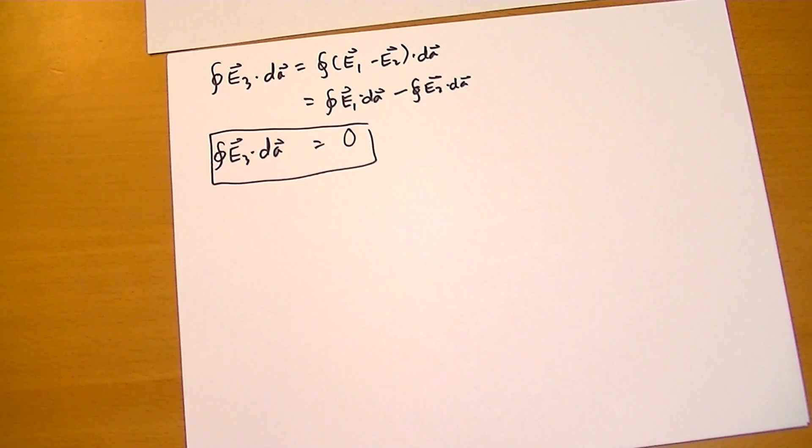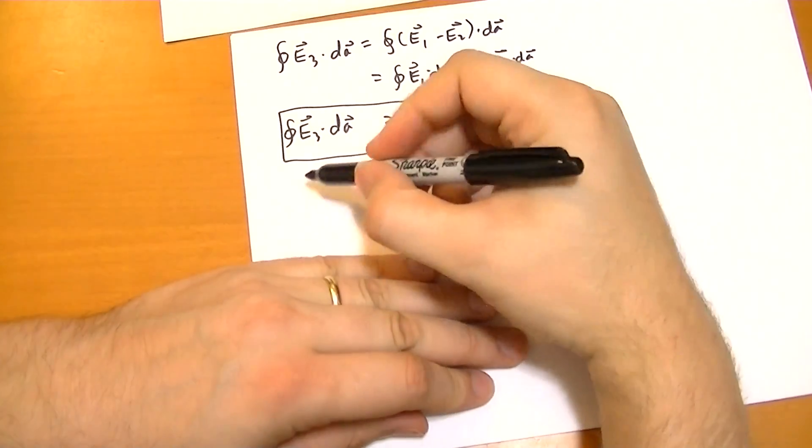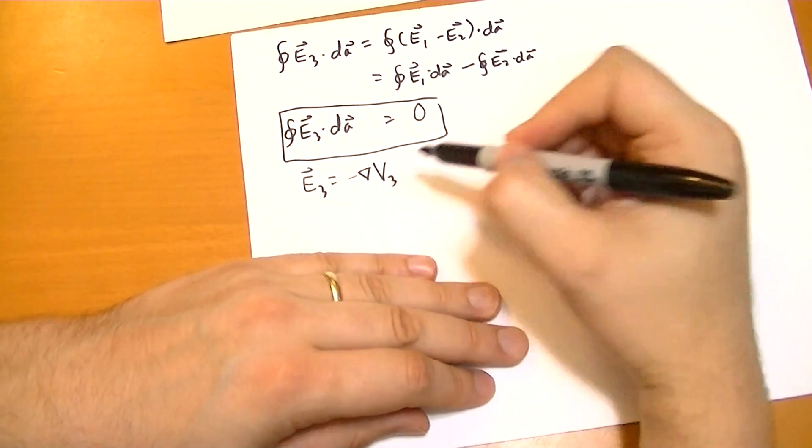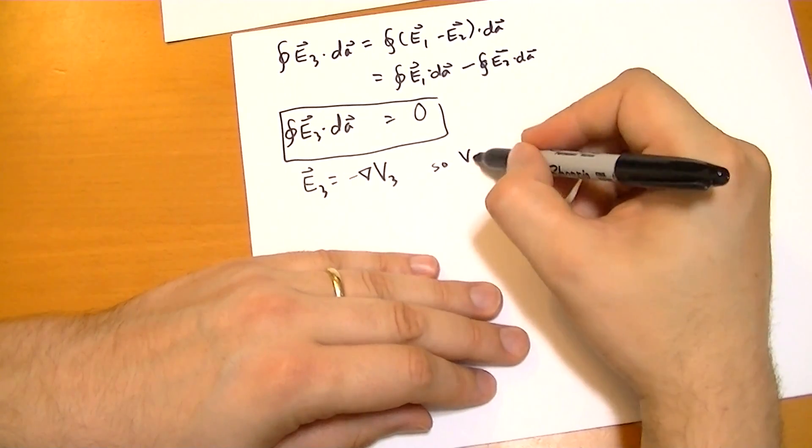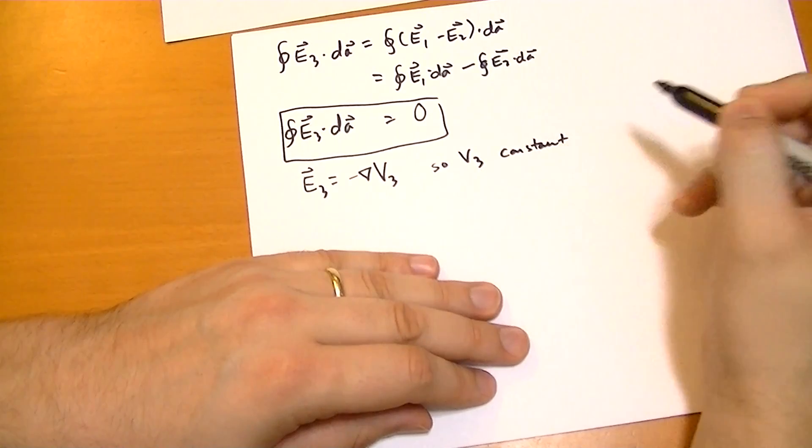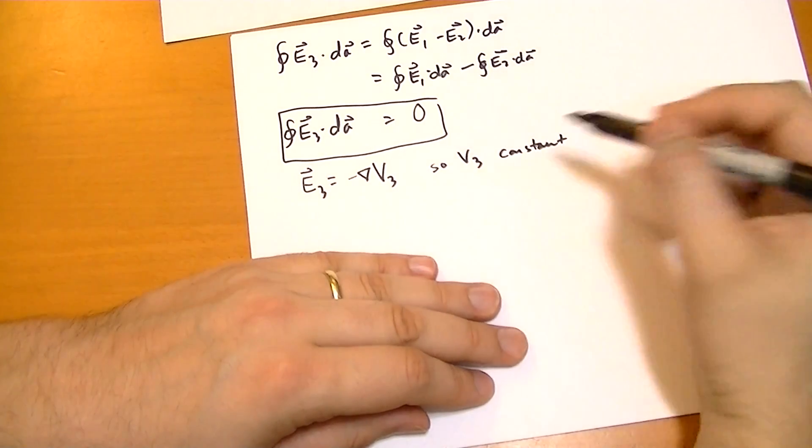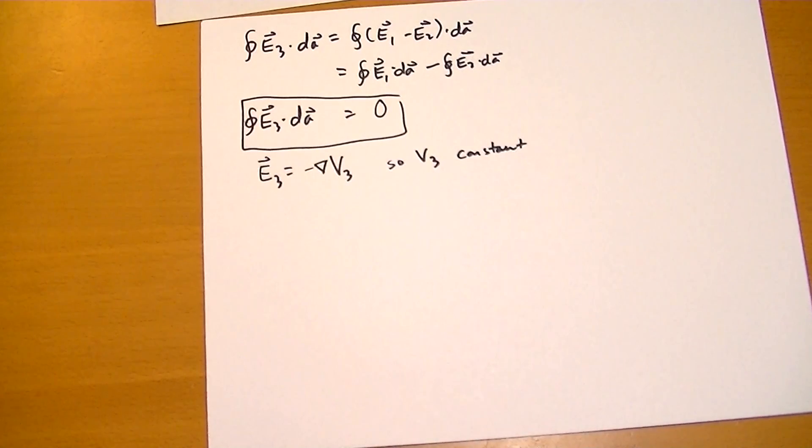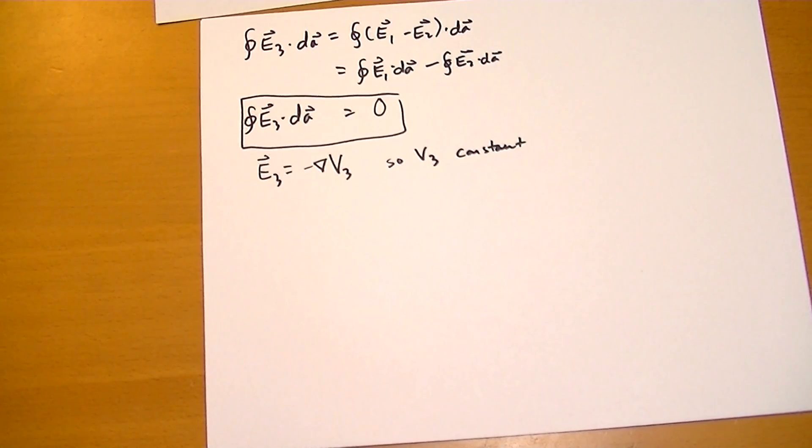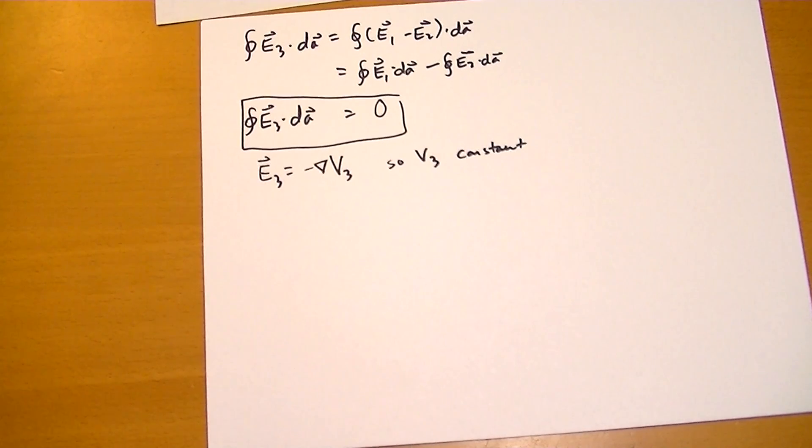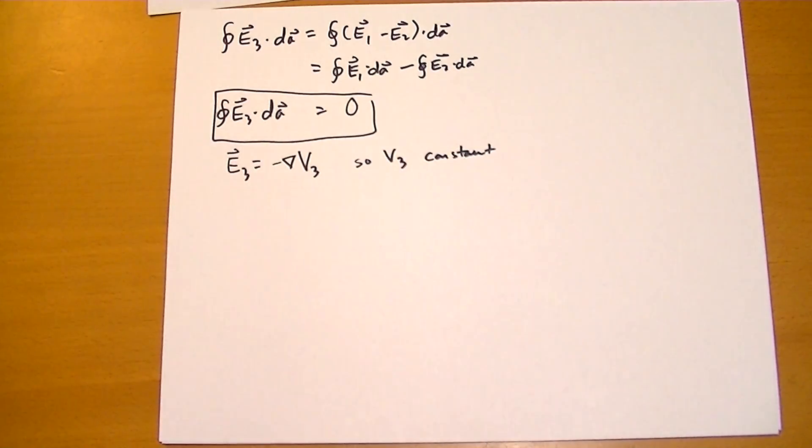And also, for each of the conductors, we know that the potential is going to be constant. So E3 vector is going to be equal to minus the gradient of the potential. So V3 is constant for each of the conductors. Let me double check something really quick in this proof. So yeah, V3 is a constant, not necessarily the same constant over each of the conducting surfaces. Because E1 and E2 might be different, then the potential that E1 gives and the potential that E2 gives could be different on the same conducting surfaces.